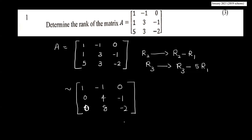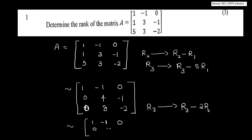Now you have to change the second row. R3 changes using R3 minus 4 times R2. Calculating: 4 into 2 is 8, 8 minus 8 is 0. Then 8 minus 6 gives values: 0, 0. Then 4 minus 1, 0, 8 minus 8, 0. Minus 2, minus 2 plus 2 gives 0.